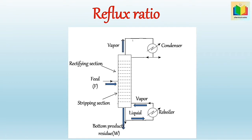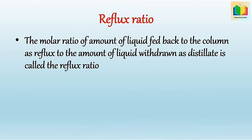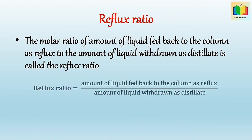The vapor rising from the top of the column is fed to the condenser. Part of the condensed liquid is returned to the column as reflux. By doing reflux, we can increase the quality or purity of the product. The remaining part is withdrawn as the top product or distillate, which is rich in the more volatile component. Hence, reflux ratio R is equal to L divided by D.